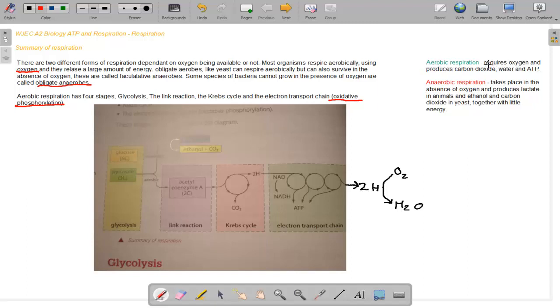Aerobic respiration requires oxygen and produces carbon dioxide, water and ATP. Anaerobic reactions take place in the absence of oxygen and produce lactate in animals and ethanol and carbon dioxide in yeast, together with a little energy. But only a little energy. Aerobic reactions give a lot of energy.